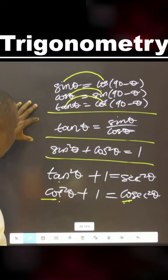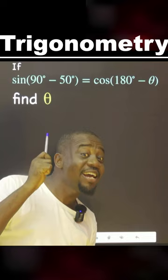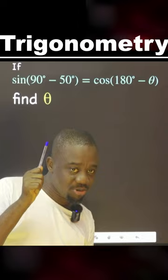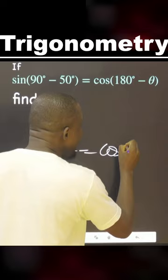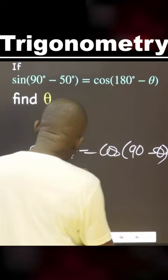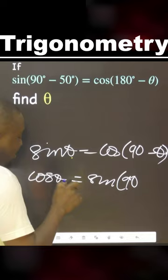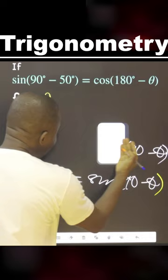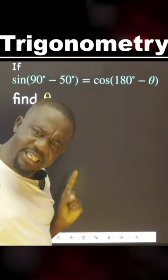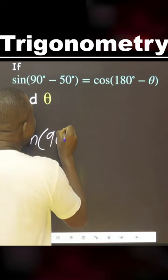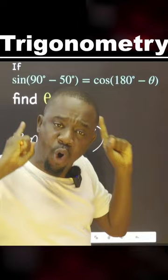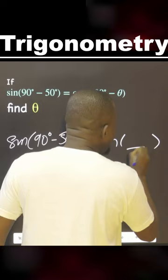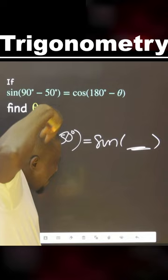Let's look at this — it is very tricky. You need to apply identity complementary angles. Remember, sine and cosine complement each other. If I have sine theta, on the other side I will have cos(90 minus theta). If I have cos theta, I will have sine(90 minus theta). They are complementary. That is what we are going to use here to find theta.